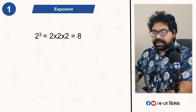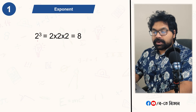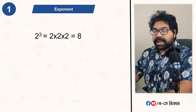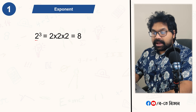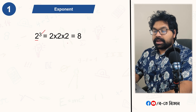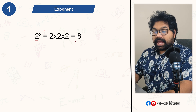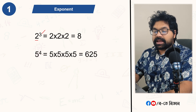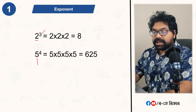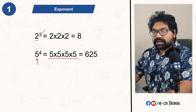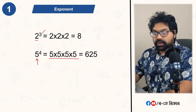Let's look at this example. 2 to the power 3 — that is 2 times 2 times 2, which equals 8. Now let's see 5 to the power 4: 1, 2, 3, 4 — so this is 5 to the power 4.